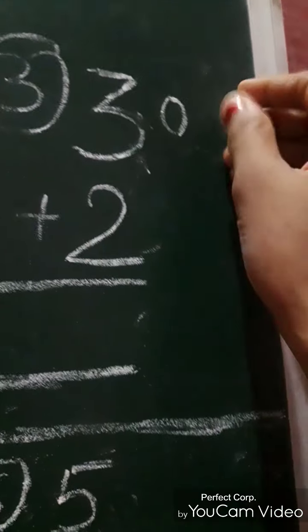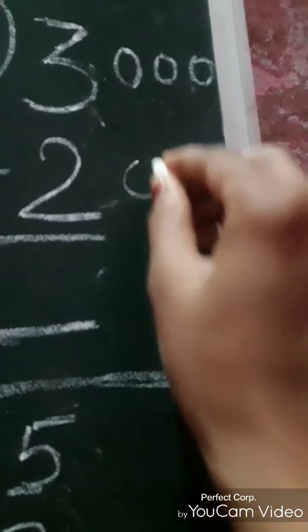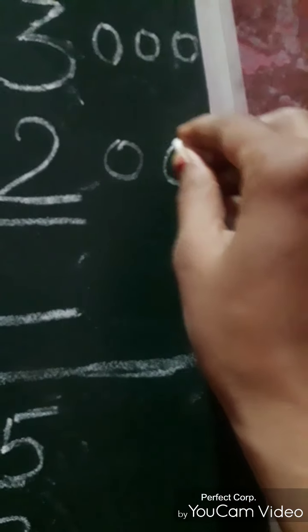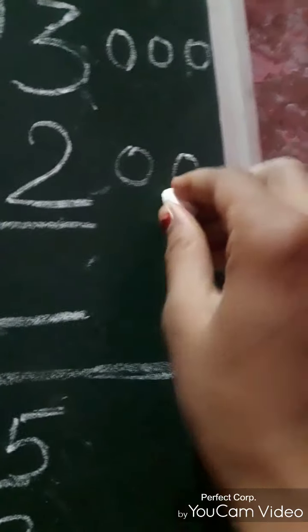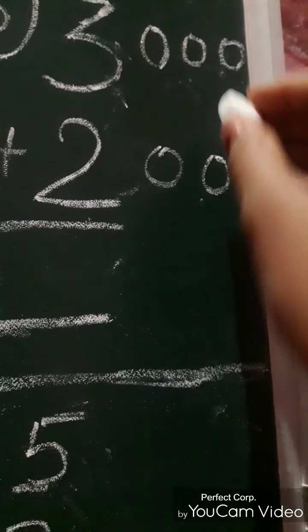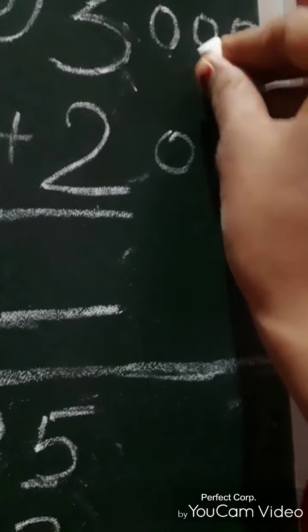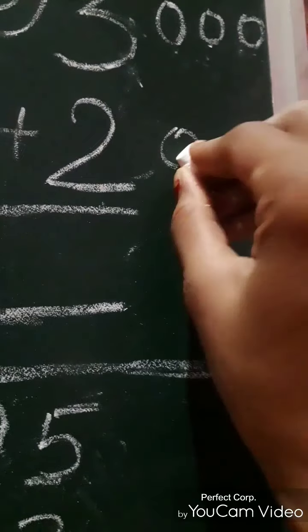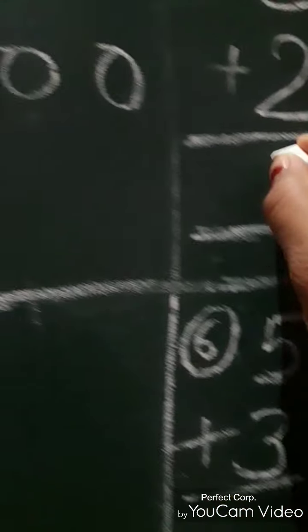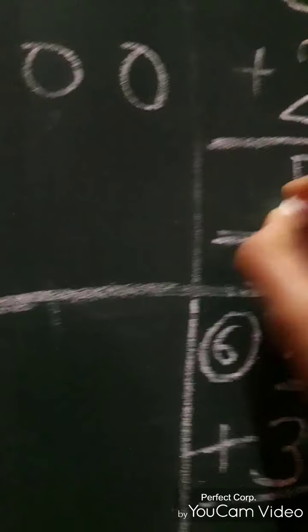Now we move to sum number three. Upside number three is written, so we draw three circles. Downside number two is written, so we draw two circles. After drawing, we count them: one, two, three, four, five — so the answer for this sum is five.